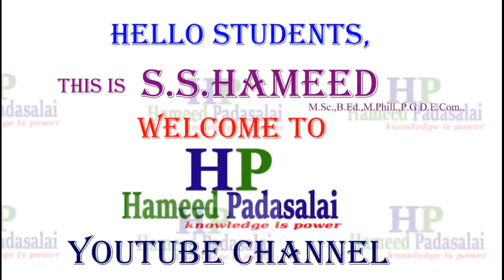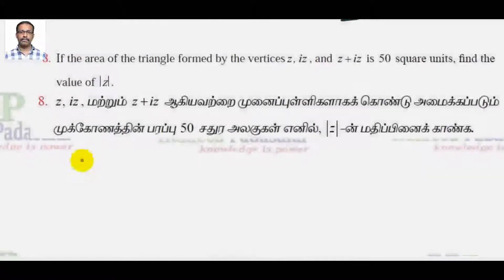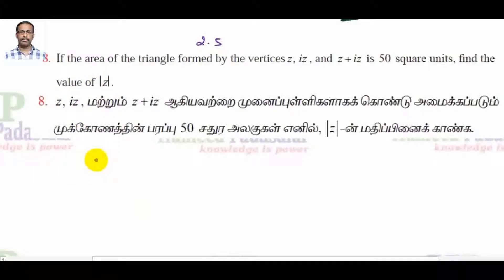Hello students, this is S.S. Hamid, welcome to Hamid Padasari YouTube channel. Now we are going to discuss sum number 8 from exercise 2.5. If the area of the triangle formed by the vertices Z, Iz, and Z+Iz is 50 square units, find the value of mod Z.